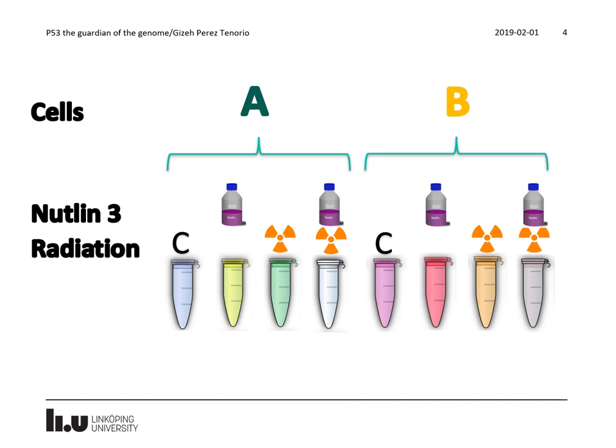On the tubes you will find different markings. These correspond with the different treatments the cell lines have received. The control cells we call minus minus. NUTLIN is marked with N, radiation treatment is marked with RT, and the double treatment with plus plus.